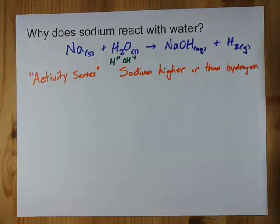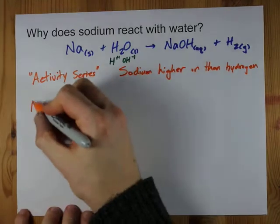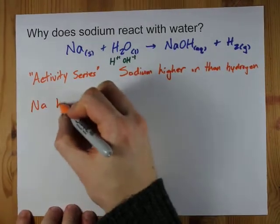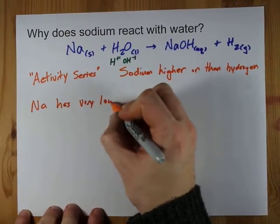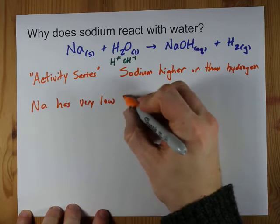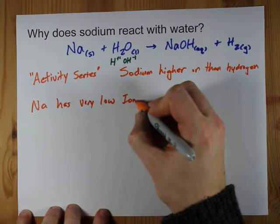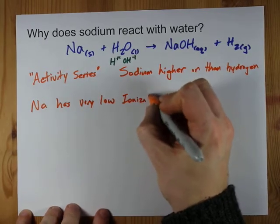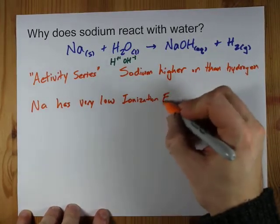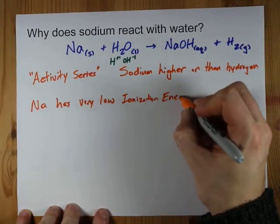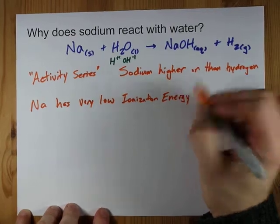The more advanced answer is that Na has a very low ionization energy. That's the amount of energy required to remove an electron from it.